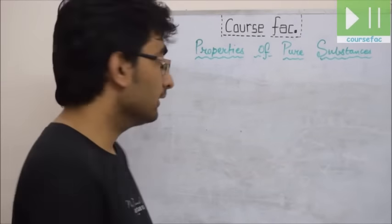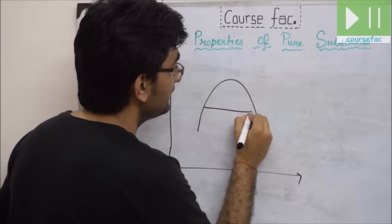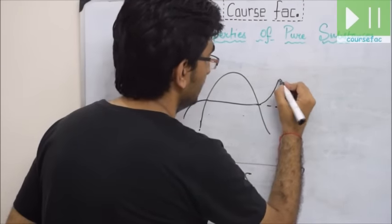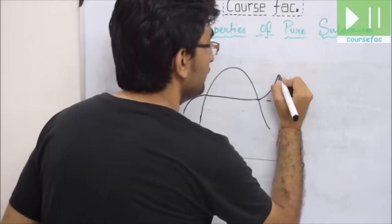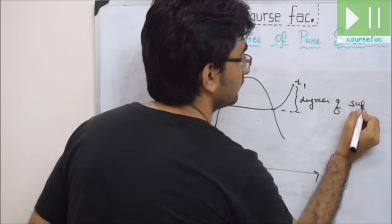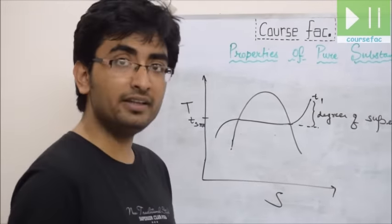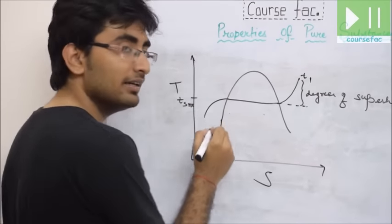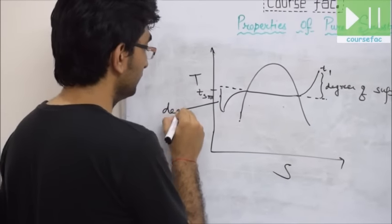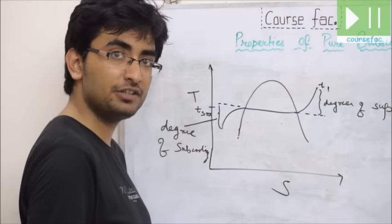Two small but important concepts: superheating and subcooling. At saturation temperature T_sat, if the vapor temperature is increased above T_sat to T1, this is superheating, and the difference is the degree of superheat — the vapor is now superheated vapor. When the liquid temperature is decreased below T_sat, this is subcooling (compressed liquid), and the difference is the degree of subcooling.